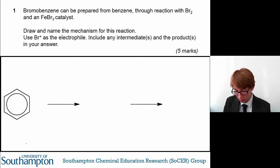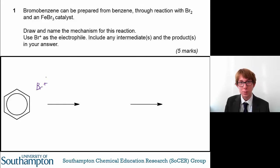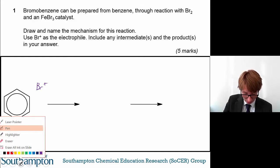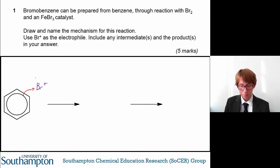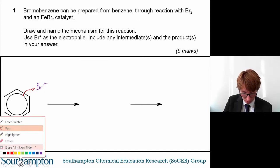So what's going to happen first? We've got the reaction of benzene with this Br+ ion. The benzene ring is a region of very high electron density, so it's very electron-rich, and this can attack an electron-deficient species — for example, Br+. So what we have here is an attack by the electron-rich benzene ring on the electron-deficient Br+.